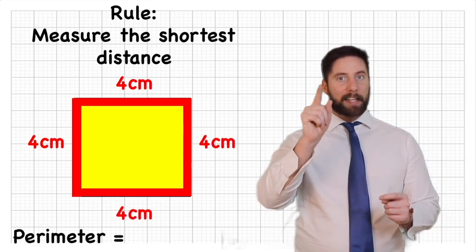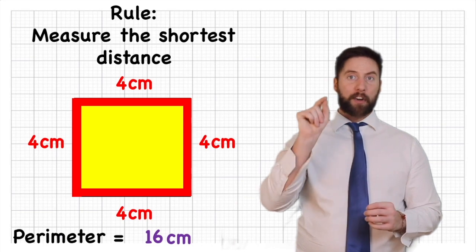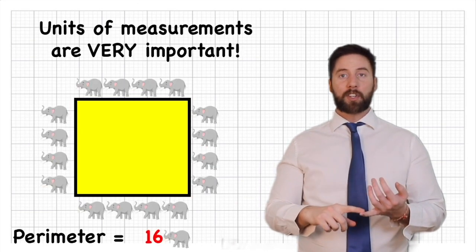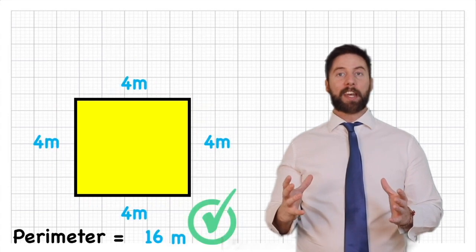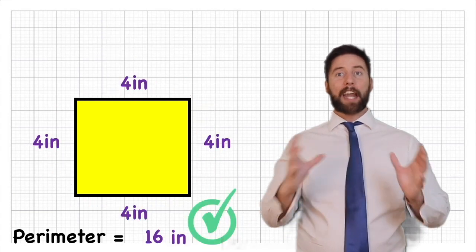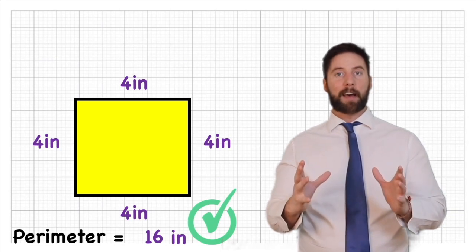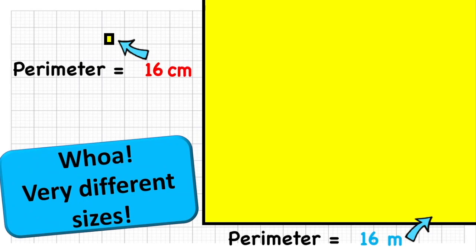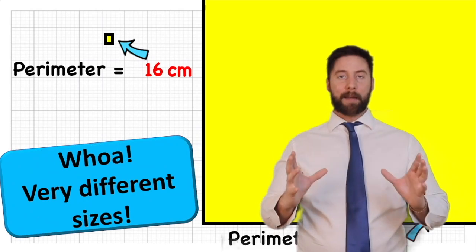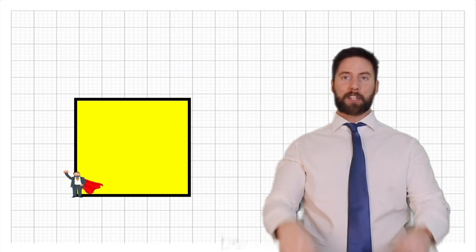16 what? That's right — centimetres. The units of measurement are very important. It's not elephants or cars, it's centimetres we're measuring in here. It could have been miles or inches or any other form of measurement, but in this case it's centimetres. A square with a perimeter of 16 centimetres is very different to one with a perimeter of 16 miles. So very, very important — we always include our units of measurement.